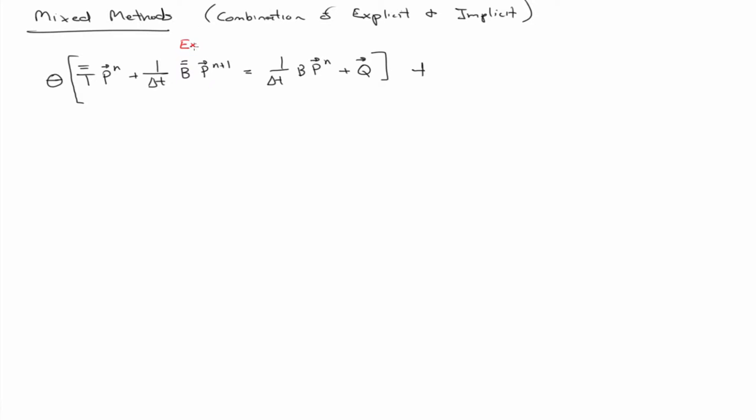Everybody should recognize that this is the equation for the explicit scheme that we just wrote down. So we're going to multiply that by theta, and then add one minus theta times the implicit scheme. This is implicit.